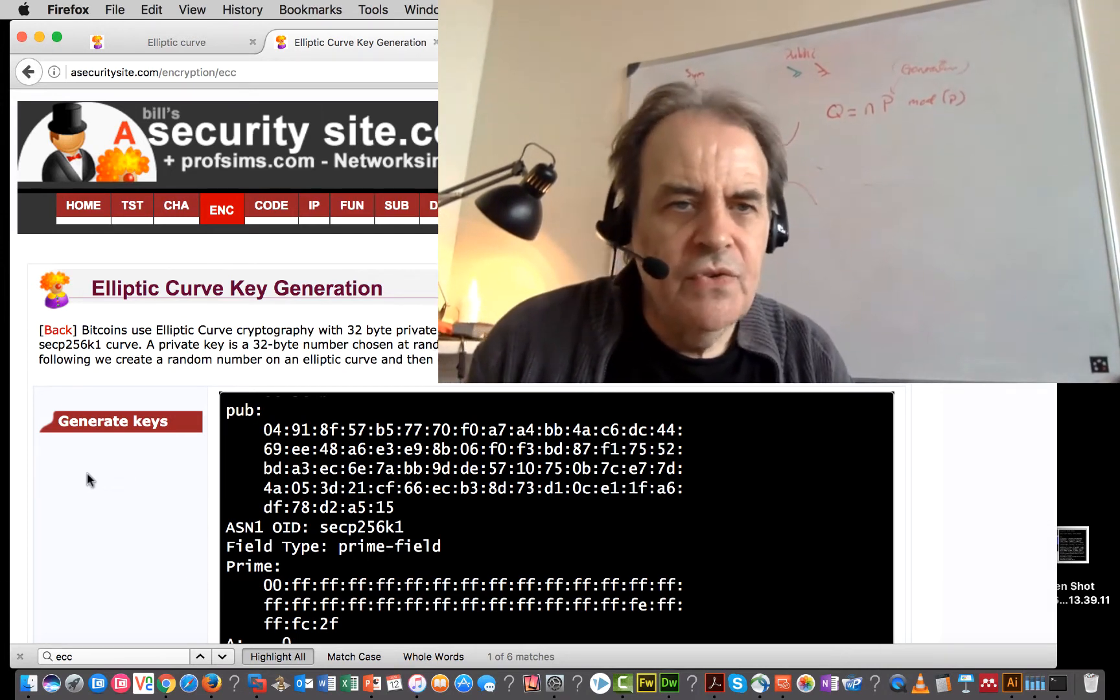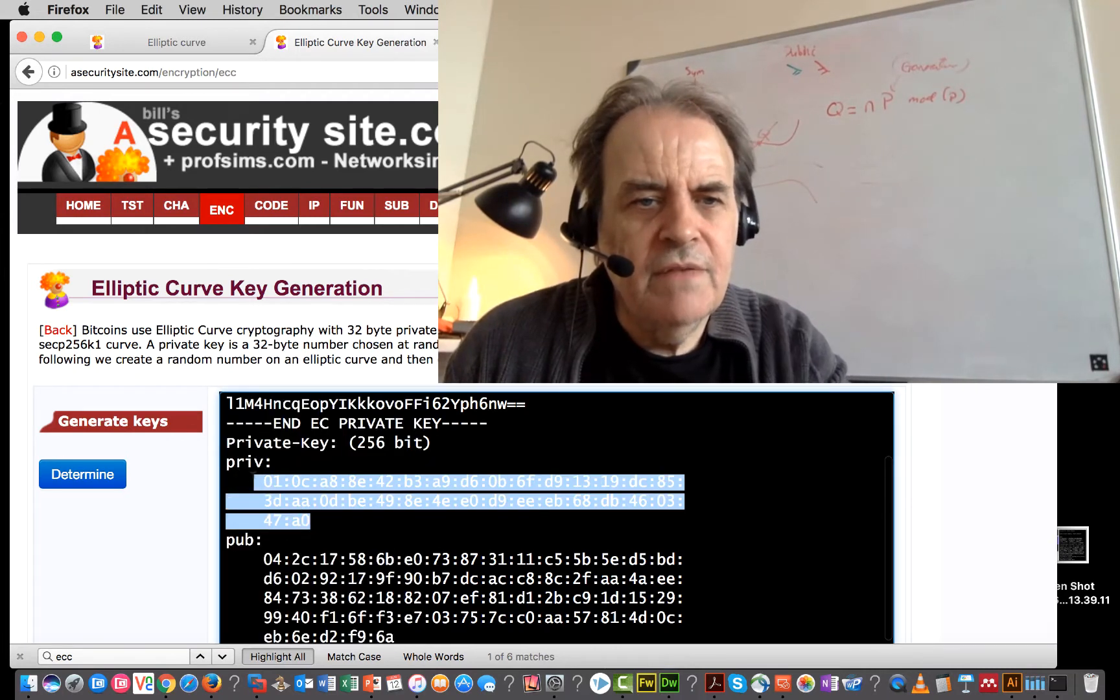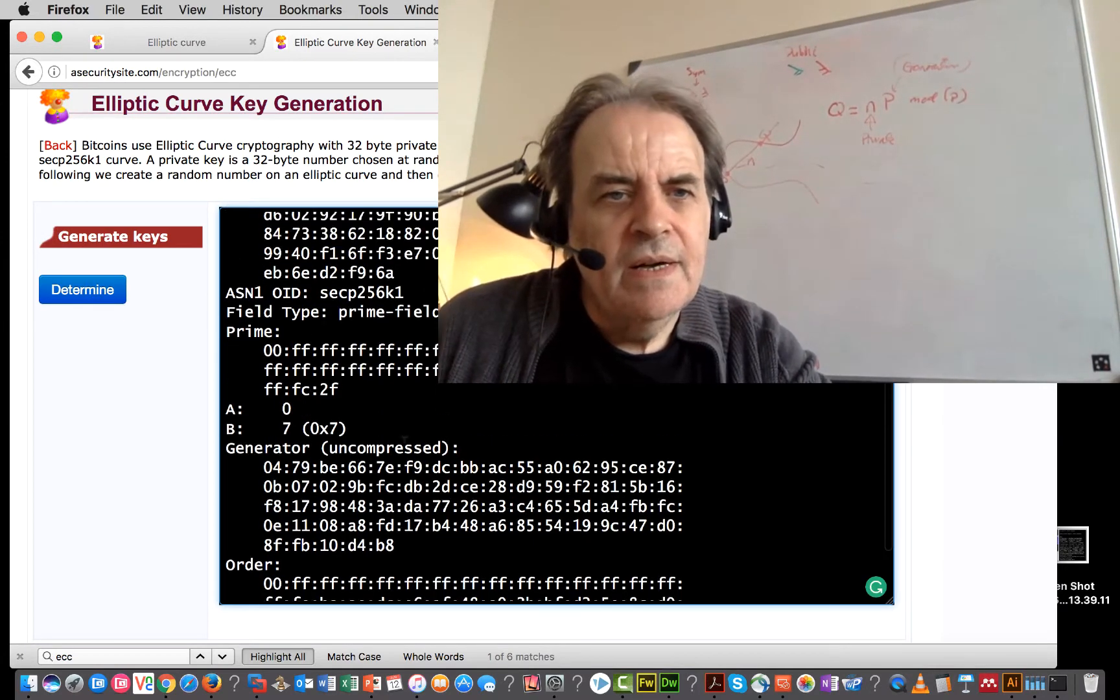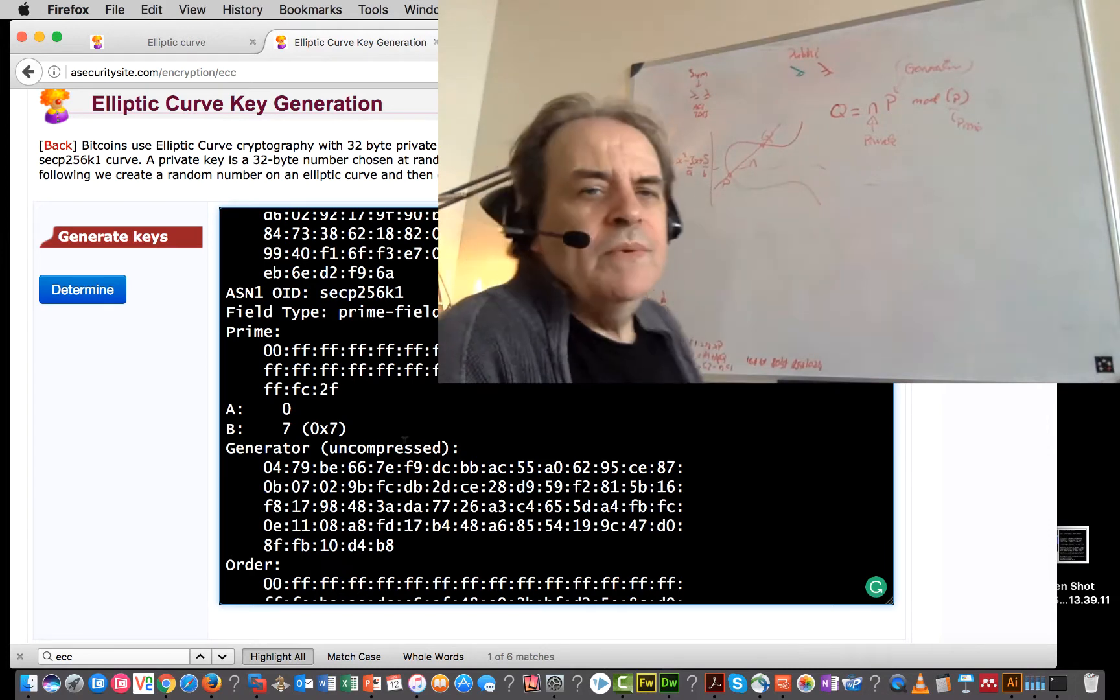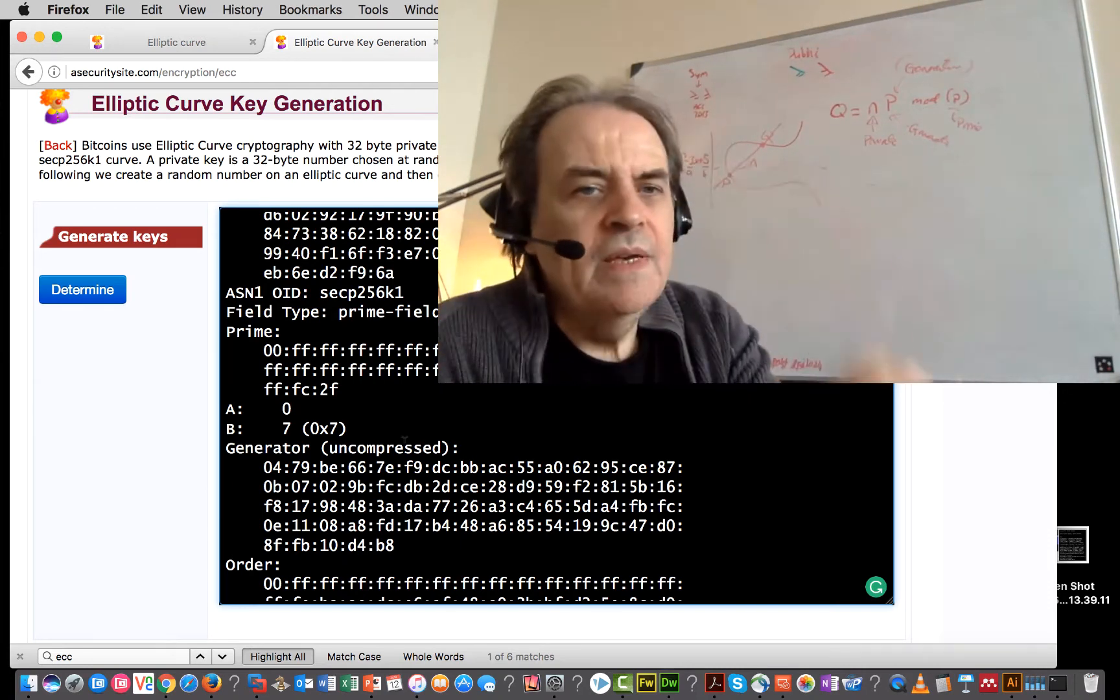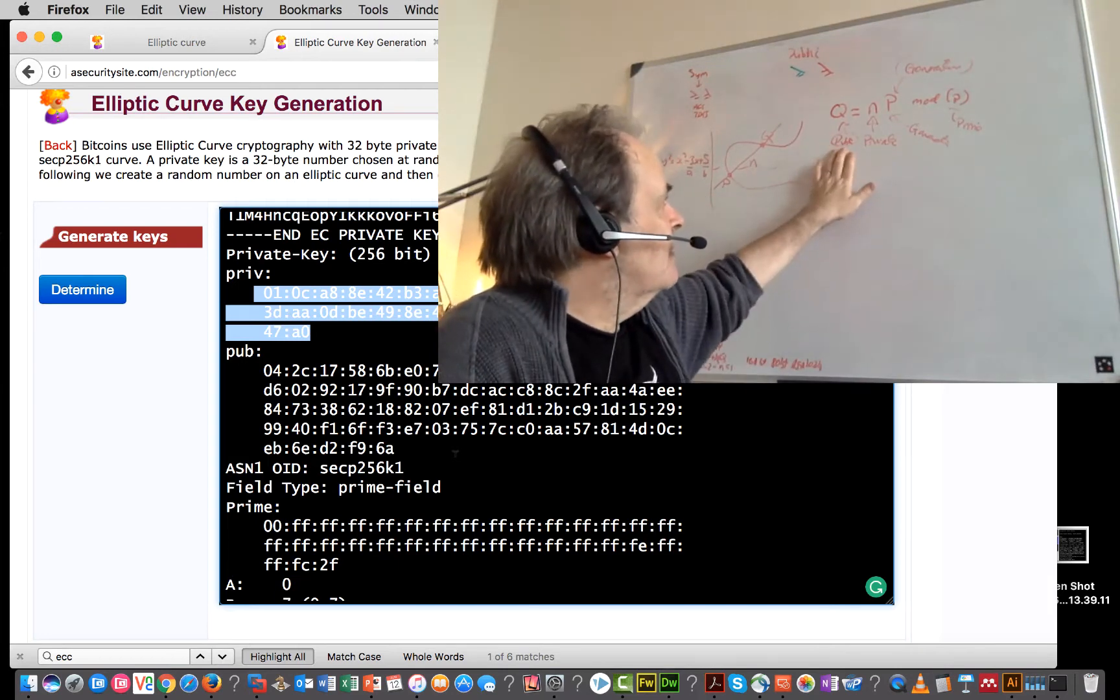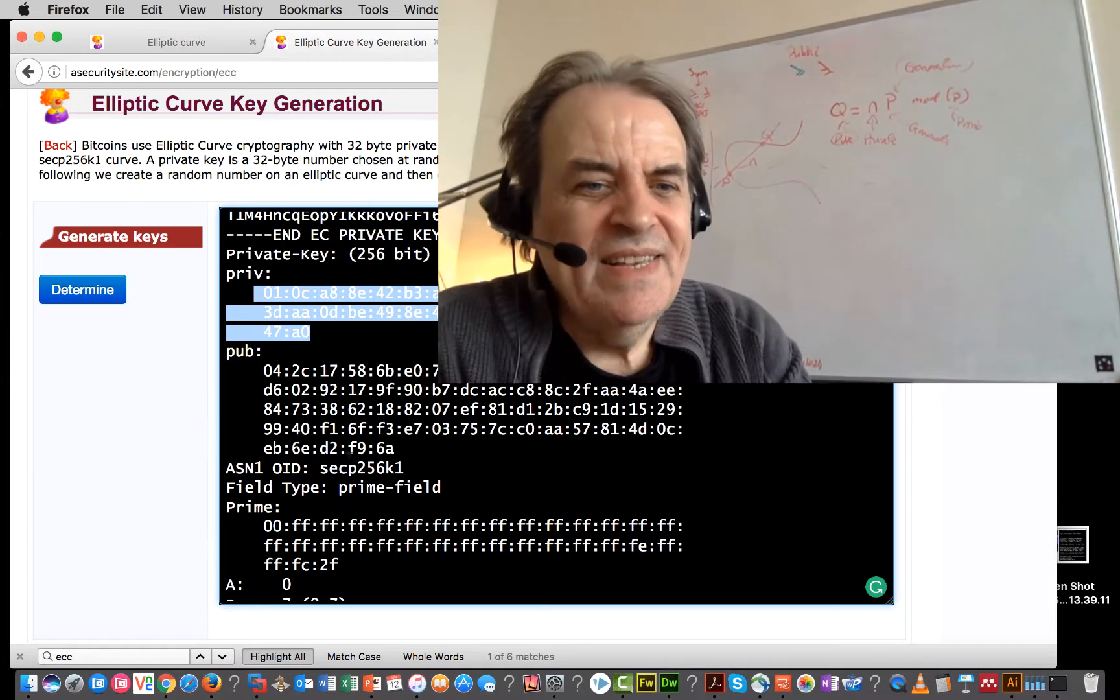If I generate a new elliptic curve key for our Bitcoin, we see here this is our private key. This value here is our value of N. That is our private key. And we shouldn't release that. We then have a public key here. And the public key, we distribute our prime number here. As we see, we have our value of A and B, which defines our curve. We then have our generator, which is a point on the curve here. And then that will give us our public key. So our public key, we can distribute, because it's difficult if we know the public key and the generator, to find the value of N.